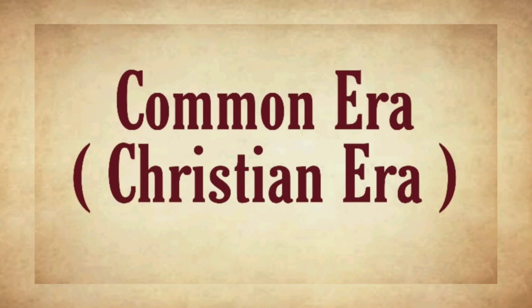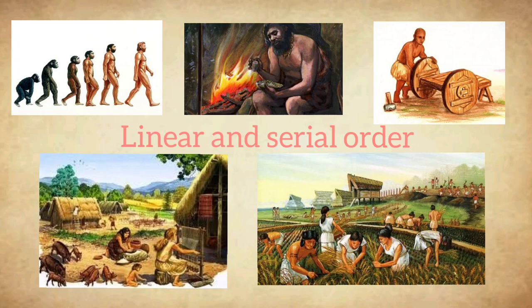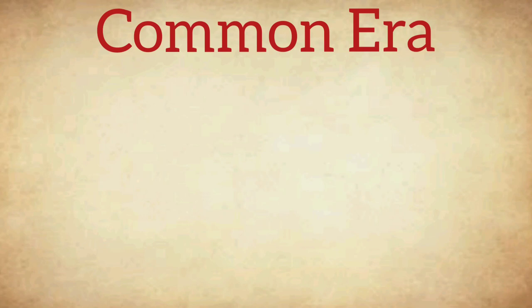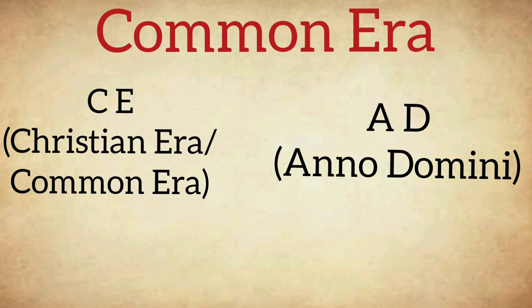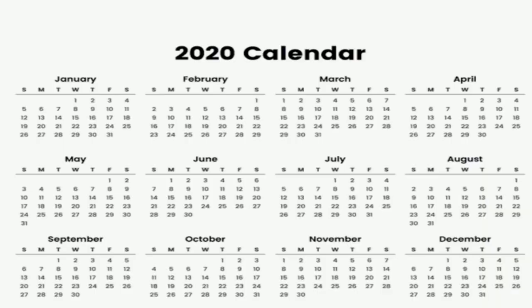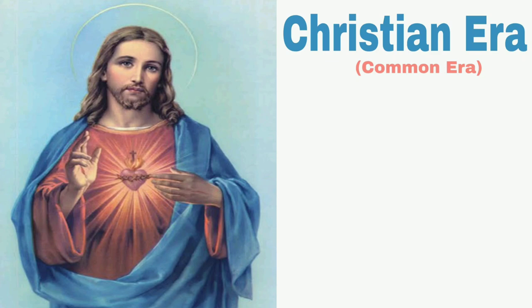Common era — it is also known as the Christian era. In history, a chain of events that follow one after the other is presented in a linear and serial manner. It simply means the events that happened in the past are arranged in a serial manner. Usually we refer to the common era, written in short as CE or AD, which means 'in the year of our Lord.' The calendar we use today is based on the Christian era, now called the common era. This era began in the memory of Jesus Christ.